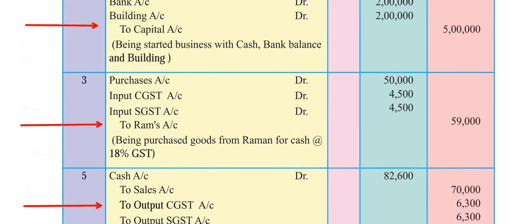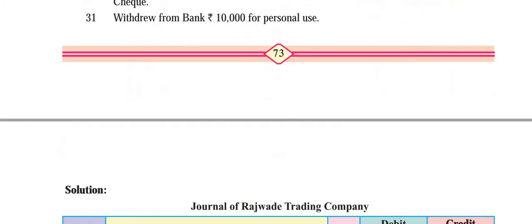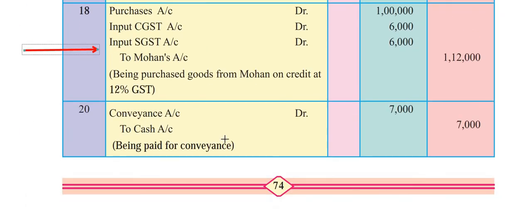The next transaction: paid for conveyance expenses. Similar to paying for repairs or wages - conveyance account debit to cash account credit. Journal entry: conveyance account debit Rs. 7,000, to cash account credit Rs. 7,000. Narration: being paid for conveyance. This is a simple expense entry.